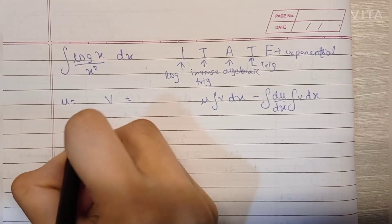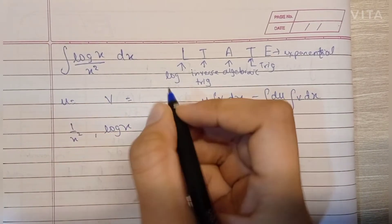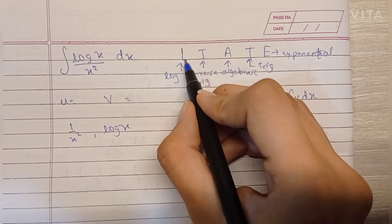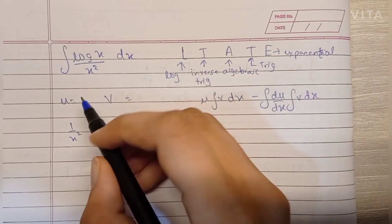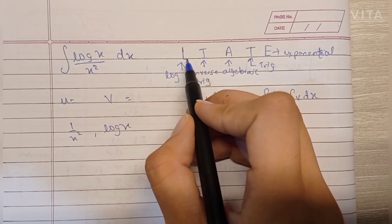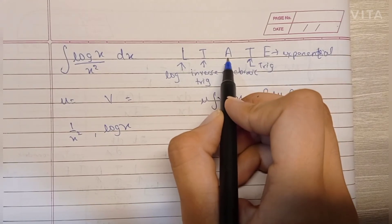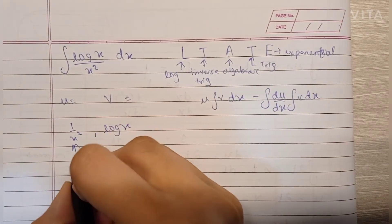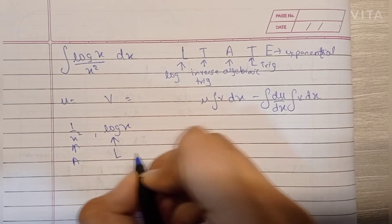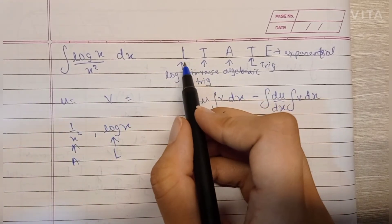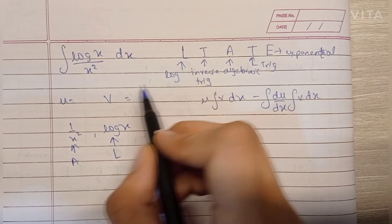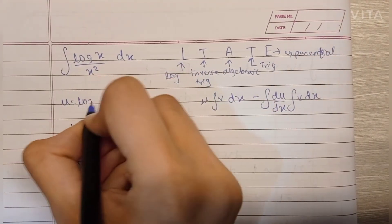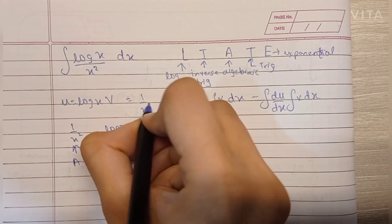Our two terms are 1/x² and log(x). The LIATE rule tells us to keep the log term as u, because it comes before A, which is the algebraic term. Here we have 1/x² as the algebraic term and log(x) as the logarithmic term. Because log comes before algebraic, log gets selected as the first term — that is, the u term — and v becomes 1/x².